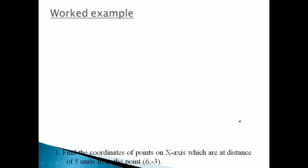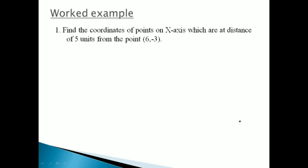Let us see some worked examples based on it. Find the coordinates of points on X-axis which are at 5 units distance from (6, −3)। First of all, let the point on X-axis be (X, 0) — why 0? Because any point lying on X-axis, to reach it, do I have to travel vertically? No — only horizontal travel needed — so Y-coordinate becomes 0। Same way on Y-axis, X would be 0। So let A = (X, 0) and B = (6, −3), and distance AB = 5।